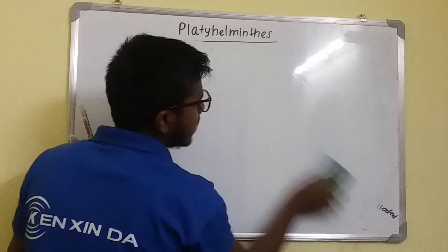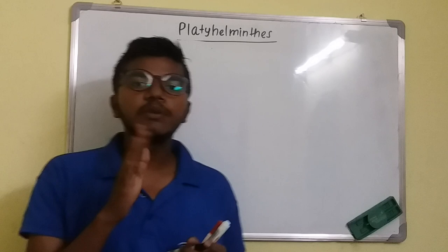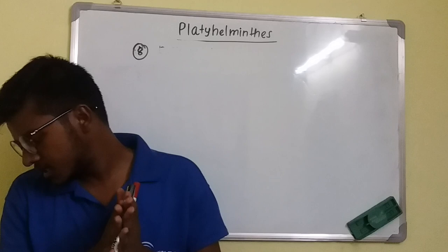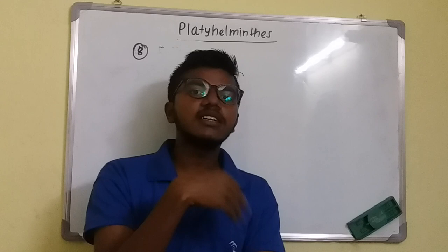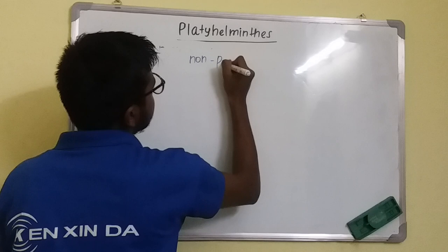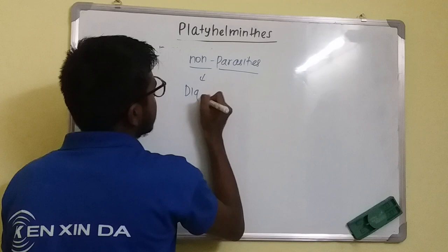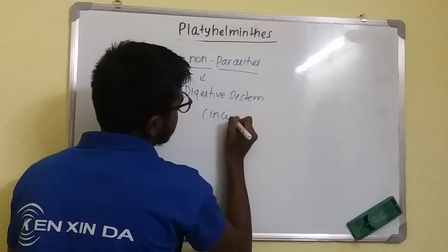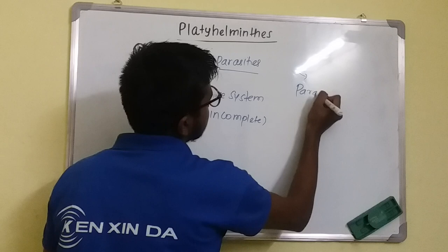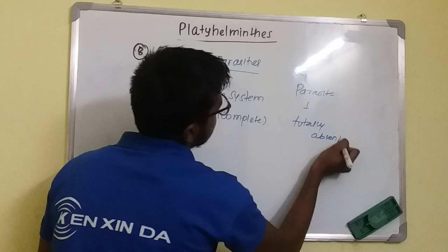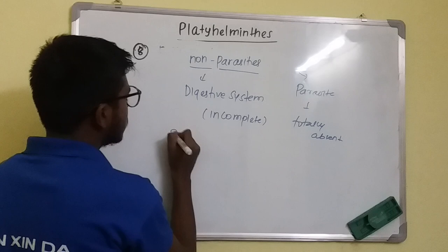The digestive system is incomplete due to the blind sac body plan — there is only a mouth, and a distinct anus is absent. In the case of parasites, the digestive system is totally absent, while in non-parasites it is incomplete.